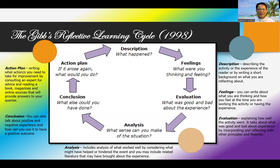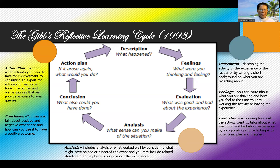Evaluation involves explaining how well the activity went — what was good and bad about the experience by incorporating and reflecting with other principles and theories. Next is analysis: what sense can you make of the situation? This includes analyzing what worked well, considering what might have helped or hindered the event, and you may include related literature. After analysis is conclusion: what else could you have done? You can talk about positive and negative experiences and how to use them to achieve a positive outcome.